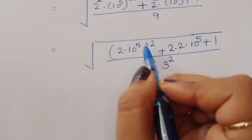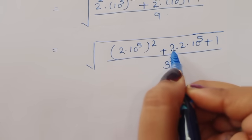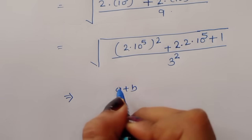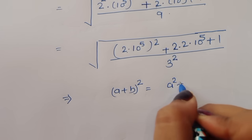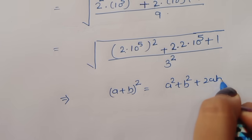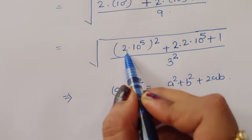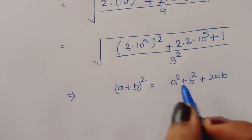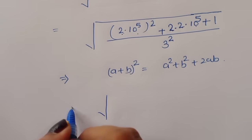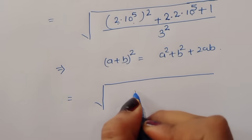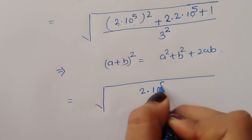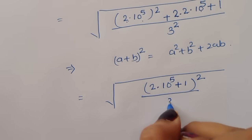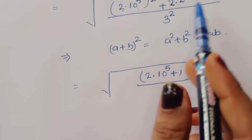Now you can see this is a perfect square pattern: a squared plus b squared plus 2ab, which is the formula for (a plus b) whole squared. So we can write this as (2 times 10 raised to 5 plus 1) whole squared, divided by 3 squared, using the identity (a plus b) whole squared equals a squared plus b squared plus 2ab.